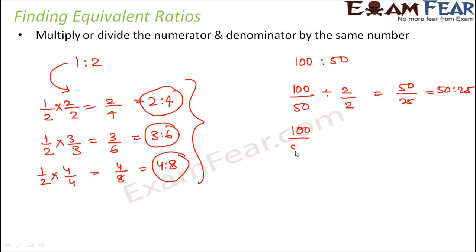If you divide it by 4, what do you get? Or if you divide it by 5, so it becomes 20 and this becomes 10, so just 20 is to 10, and so on.